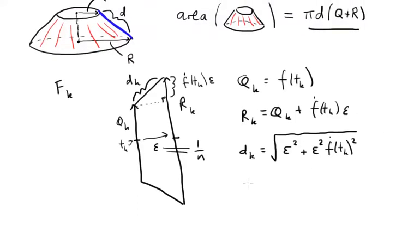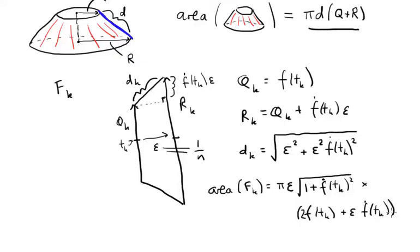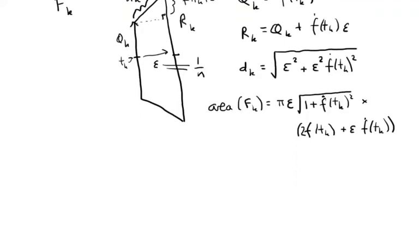Right, so the area of the frustum fₖ is π times d. Well, let's take this factor of ε out. Right, so there's an ε squared. Take it outside the square root and it just becomes an ε, left with 1 plus f dot at tₖ squared, square rooted. And then we have qₖ plus rₖ, so this is times f at tₖ plus f at tₖ, so two of these, plus ε times f dot at tₖ.